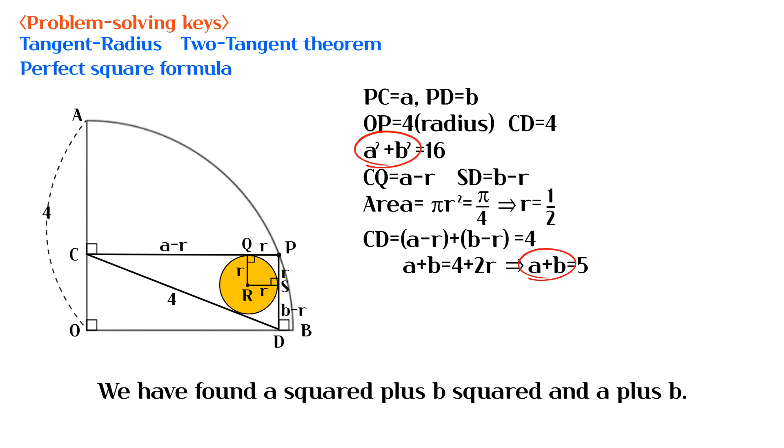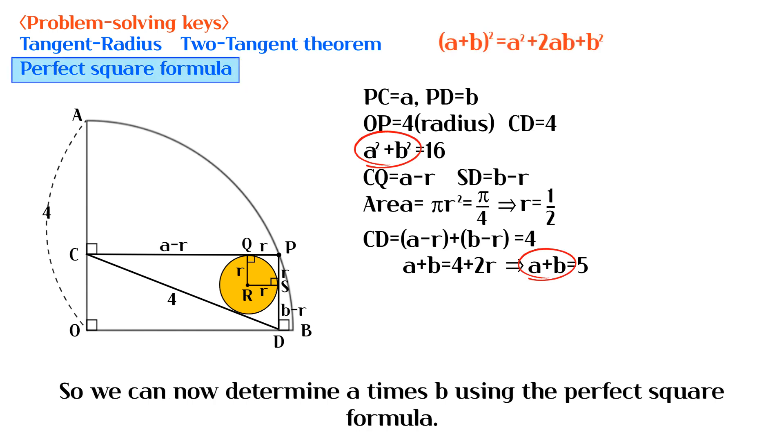We have found A squared plus B squared and A plus B. So we can now determine A times B using the perfect square formula.